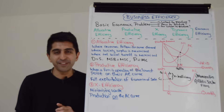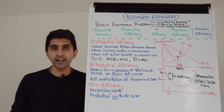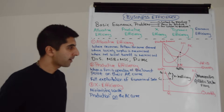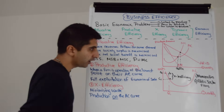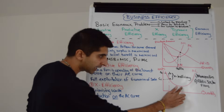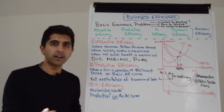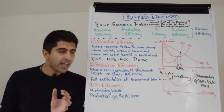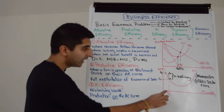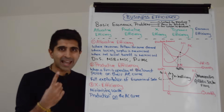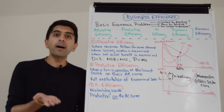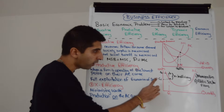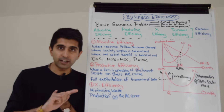Let's now look at X efficiency. X efficiency occurs when a business is minimizing their waste — i.e., there are no excess costs — and that occurs when production takes place on the average cost curve. Let's show that diagrammatically. Take a business and their average cost curve, but this business is not large enough to reach productive efficiency — they're only producing quantity Q1. Even at Q1, a business could minimize their waste by producing on their average cost curve, achieving X efficiency at point A with costs of C1. If the business were X inefficient, production would take place above the average cost curve, maybe at point B with costs of C2. The difference between C2 and C1 is the X inefficiency — the excess cost and waste that could creep in.